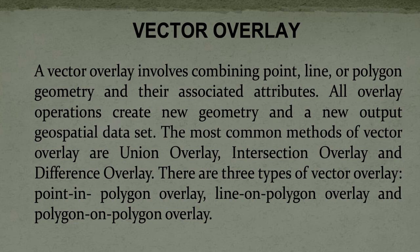The first and foremost function is vector overlay analysis. By this term you should be aware of what is vector and what is raster. In vector, we have point, line, and polygon where all geographical spatial data will be demarcated. Entities and geographical features will be demarcated using point, line, polygon with x, y coordinates. In vector overlay, the geometry — point, line, polygon — and their associated attributes will be overlaid to create a new geometry and a new output geospatial dataset, like a common overlay, union, or intersection.